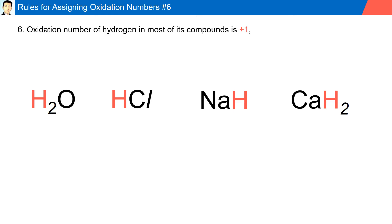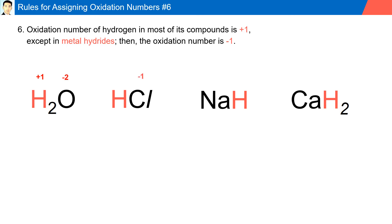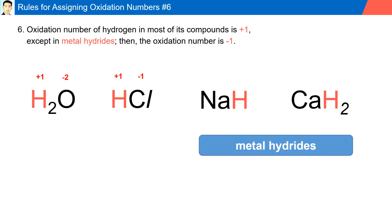Rule number six: the oxidation number of hydrogen in most of its compounds is plus one, except in metal hydrides where the oxidation number is minus one. In water, oxygen is minus two and each hydrogen contributes plus one. In HCl, chlorine is minus one, therefore hydrogen is plus one. In metal hydrides, sodium is in Group 1 with a charge of plus one, so hydrogen has a minus one oxidation number. Calcium, found in Group 2 with an oxidation number of plus two, requires two hydrogens each contributing a minus one oxidation number.